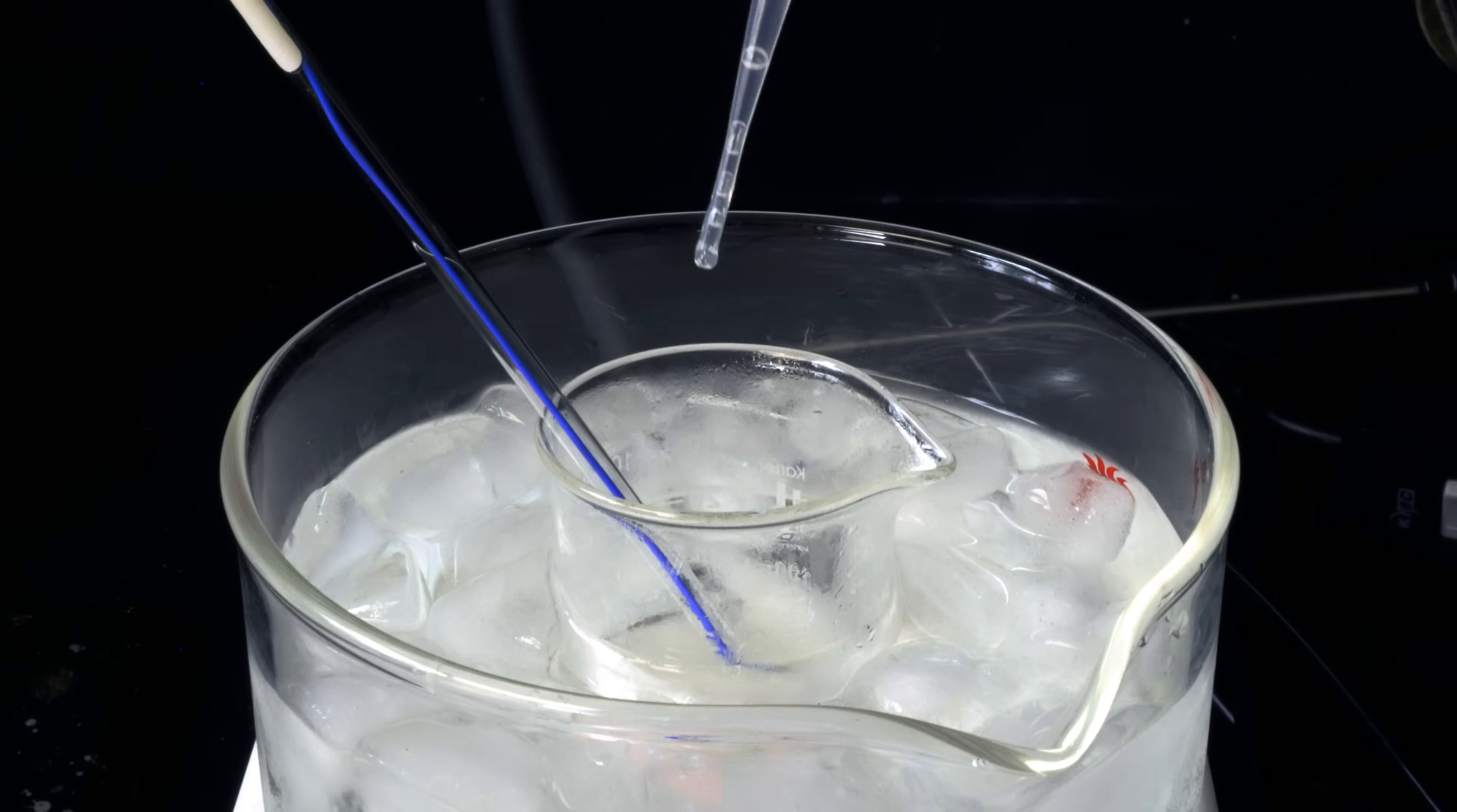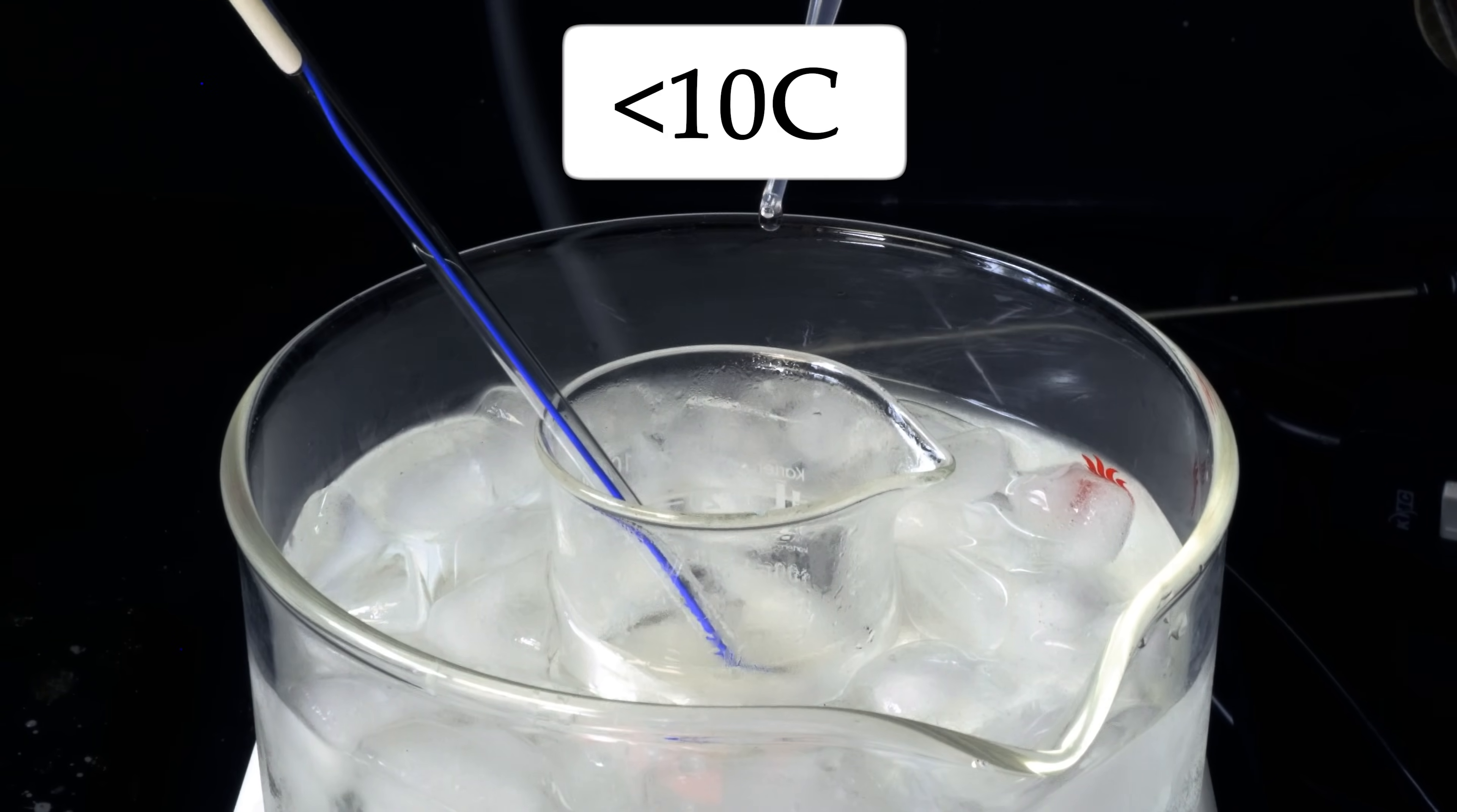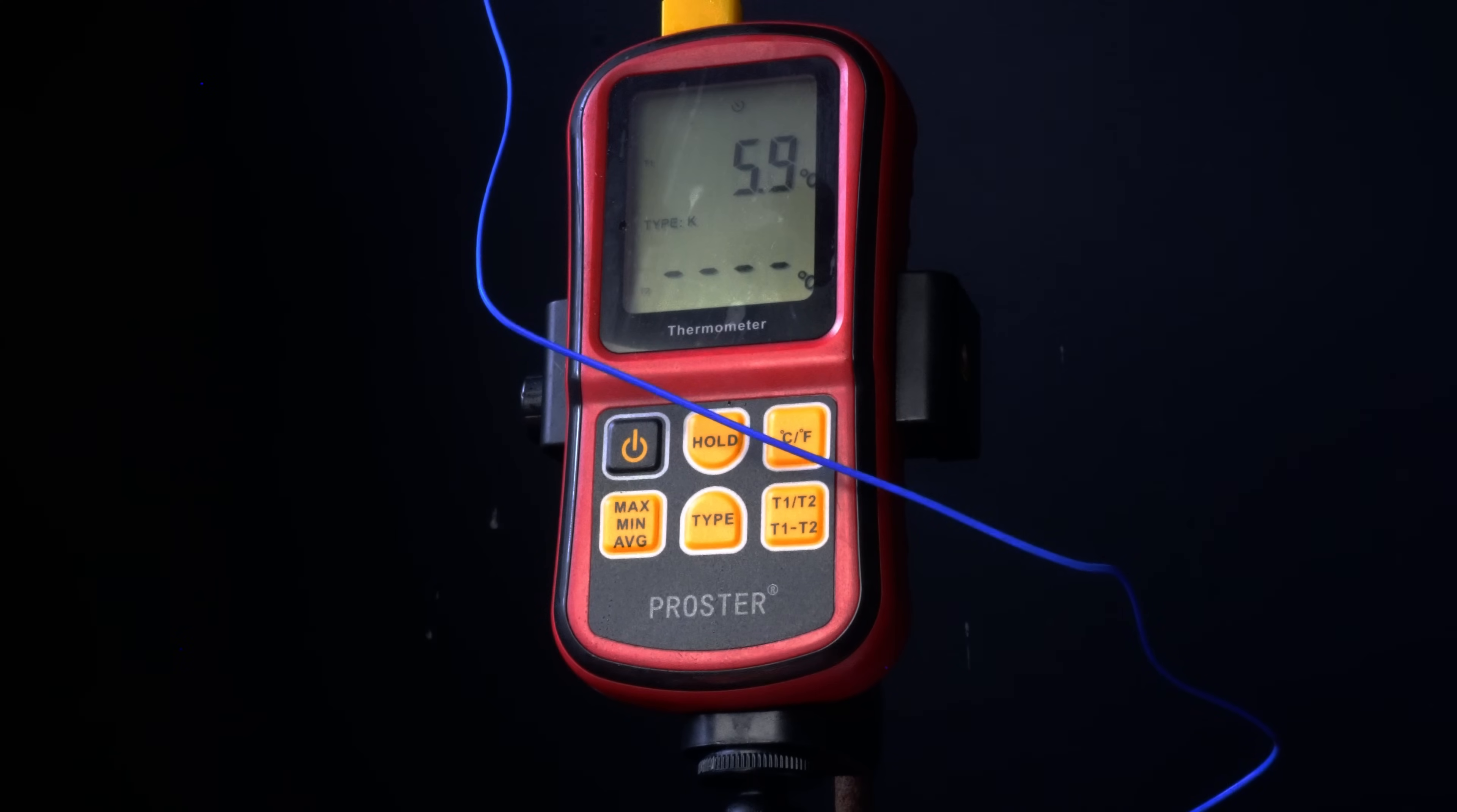Now when we add the glycerin, we need to make sure to do this drop-wise, as this is an exothermic reaction and the temperature will shoot up. We need to keep this below 10 degrees Celsius, as if it gets up to about 30 degrees Celsius, it will do a runaway reaction. You can see an instant shoot-up in temperature the second I add the glycerin in.